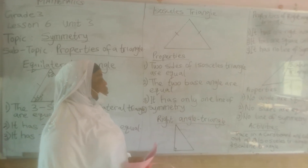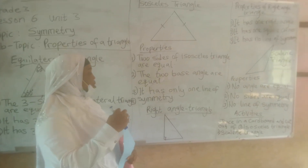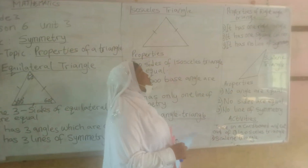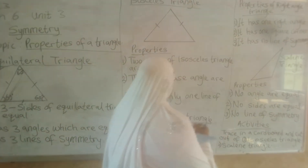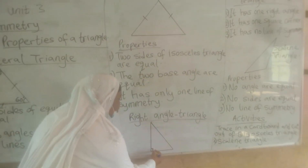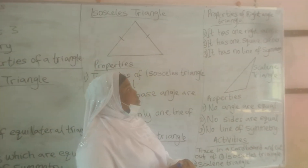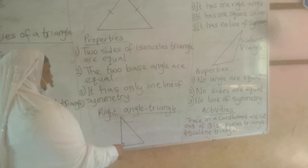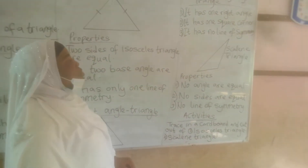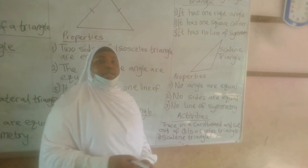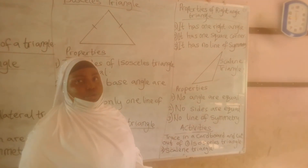Then we have what we call a right angle triangle. The properties of a right angle triangle are: it has only one right angle at this corner. You can see that this shape is a square. Then it has no line of symmetry. There is no line of symmetry in a right angle triangle.